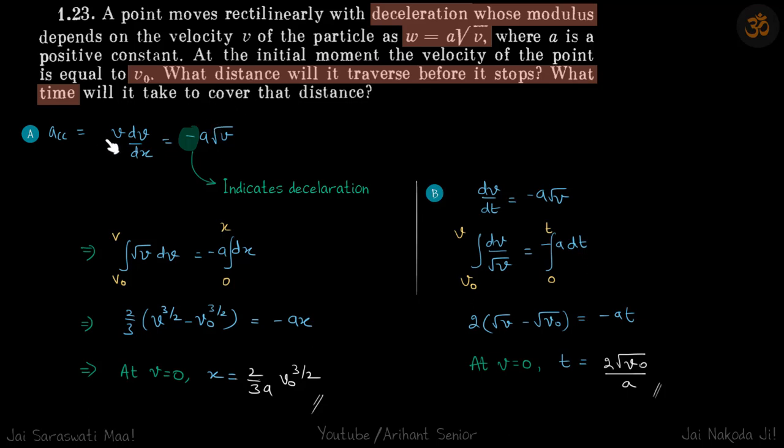So in this problem we wrote the acceleration in two different forms. We wrote it in this form because we wanted a relation between velocity and position, and we wrote it in this form because in second part of question we wanted the relationship between velocity and time. So when velocity is 0, what is the position, and here we needed when velocity is 0, what is the time.